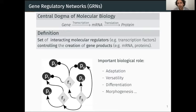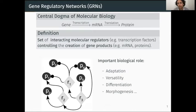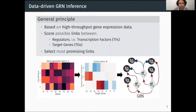GRNs have important roles in biology, for example in the adaptation of organisms to changing environments, and also in the differentiation of different tissues or morphogenesis.